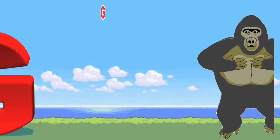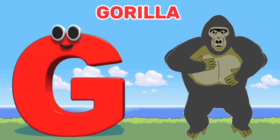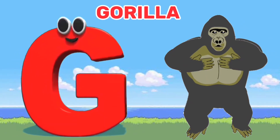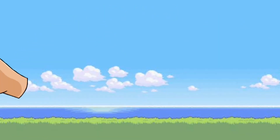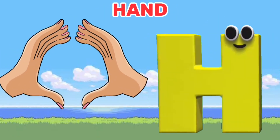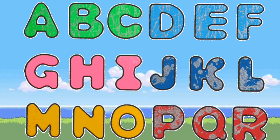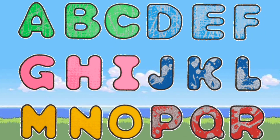G is for Gorilla. G, G. H is for Hand. H, H. It's A, it's Sing, it's the letters of the alphabet.